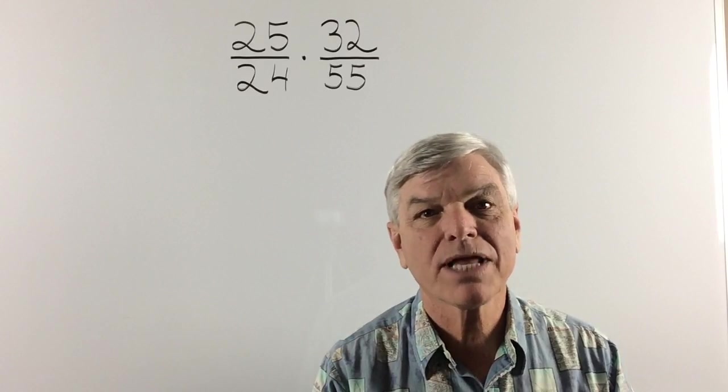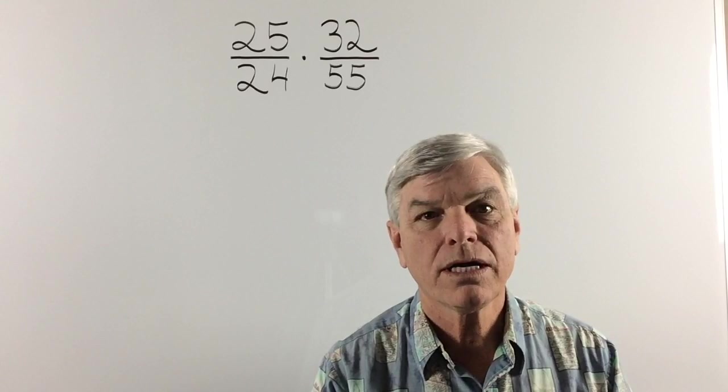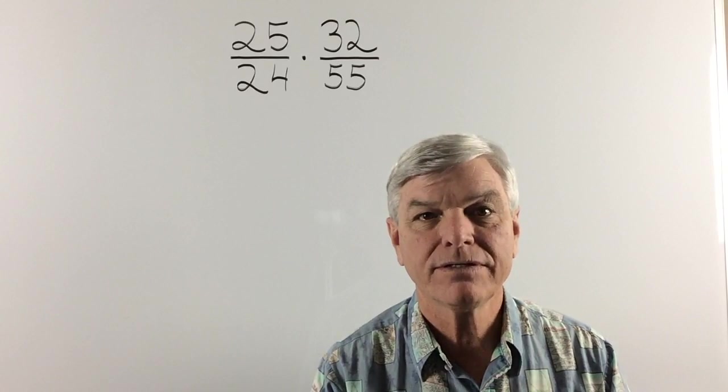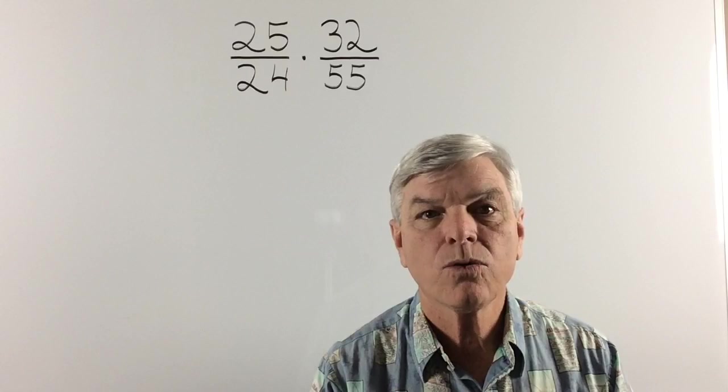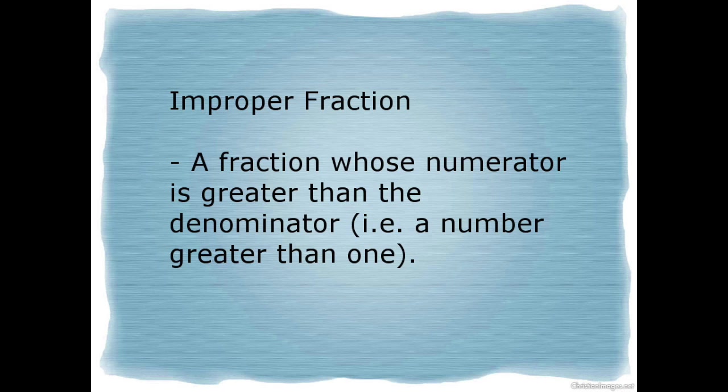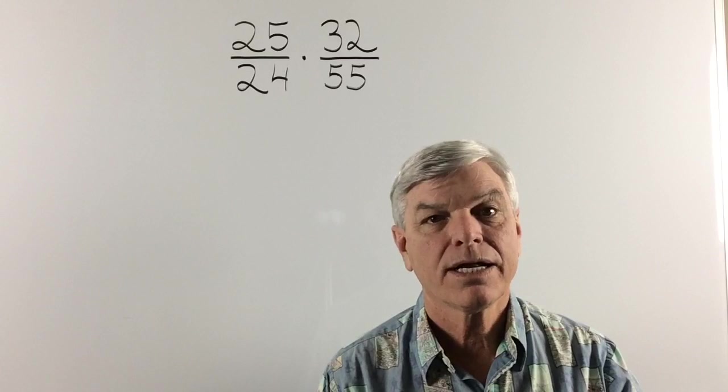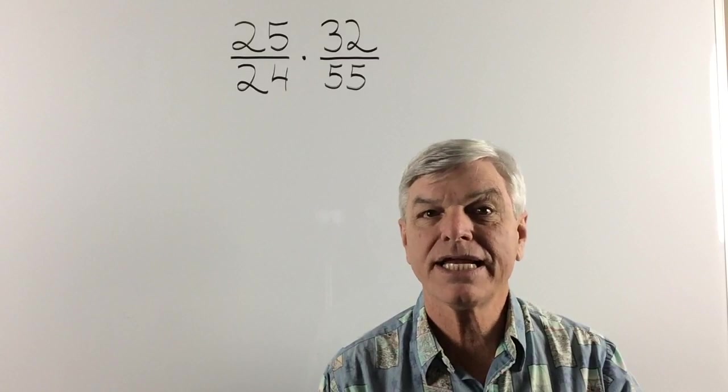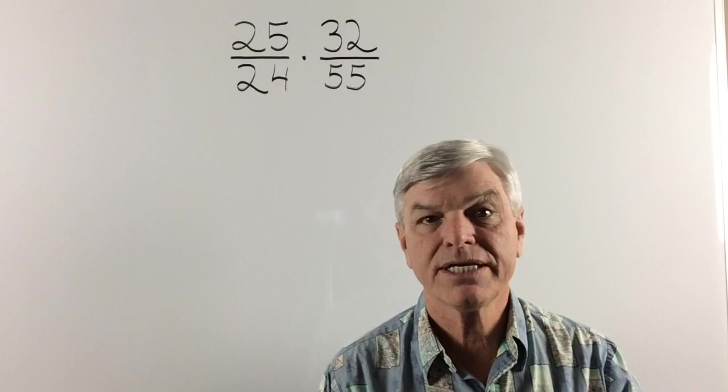Let's multiply 25 over 24 times 32 over 55. Now first off, 25 over 24 is an improper fraction. An improper fraction is a fraction with a numerator greater than its denominator. In other words, a value greater than 1. Now before we multiply our fractions, they need to be reduced first. But the interesting thing is, when you reduce the numerator, you can reduce either denominator.